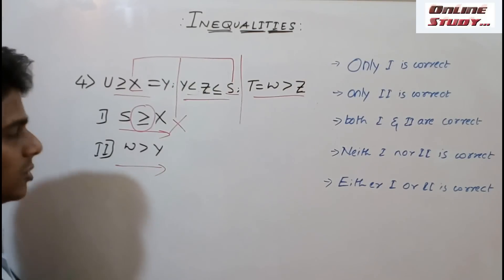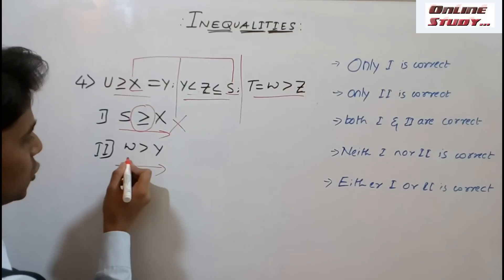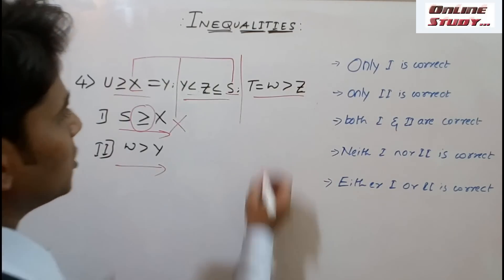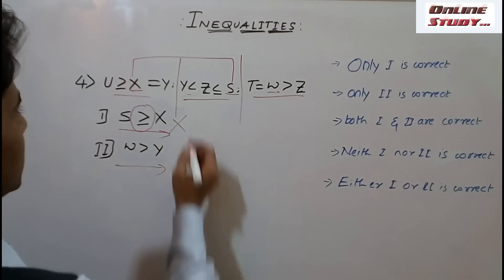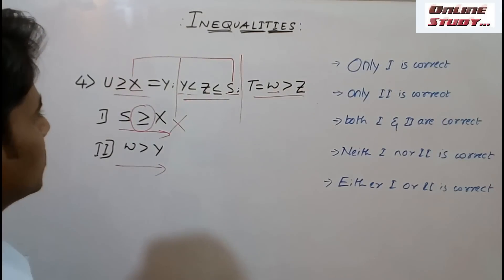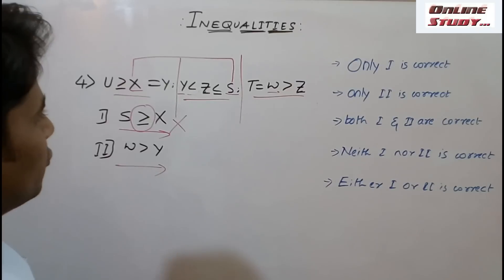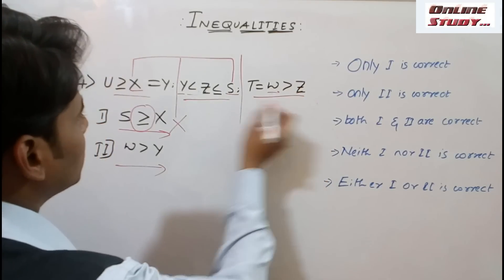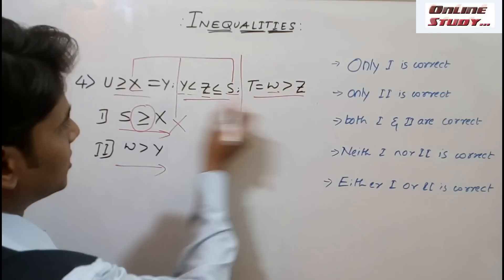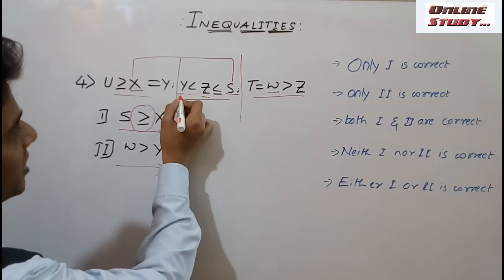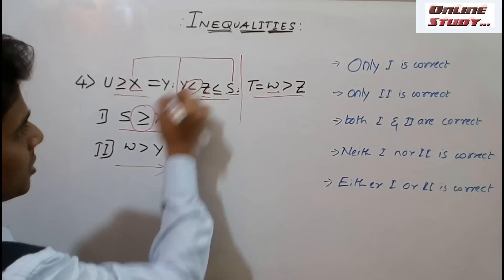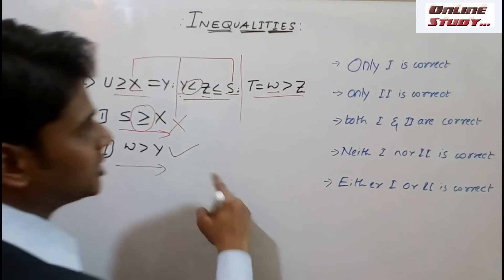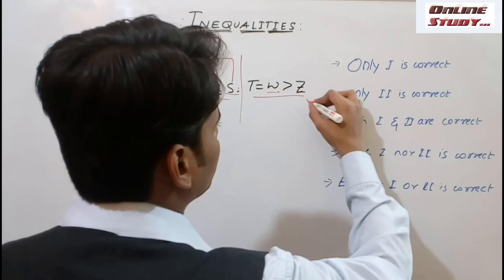Now the second conclusion: the gate is open at W, so we travel from W to Y. W is here and Y is here. From W to Z, yes it is possible — the gate is open. From Z to Y, yes we can travel — the gate is open. So conclusion 2 is true. We mark conclusion 2 as correct.